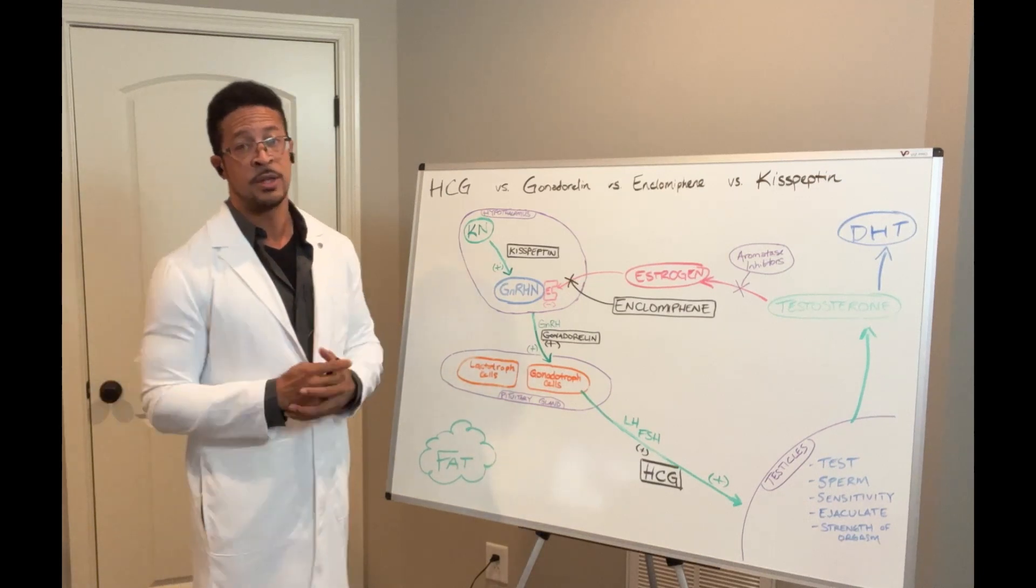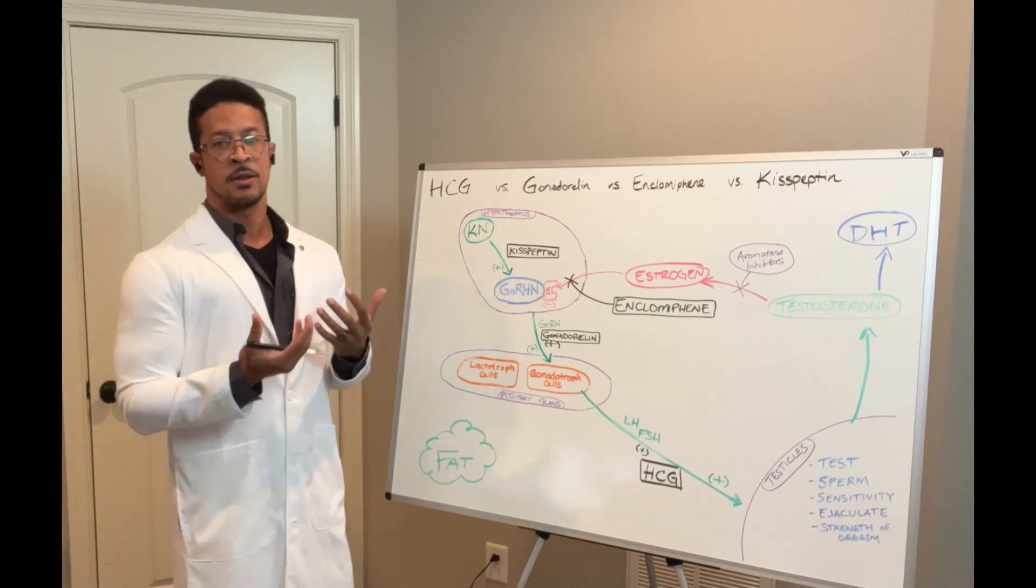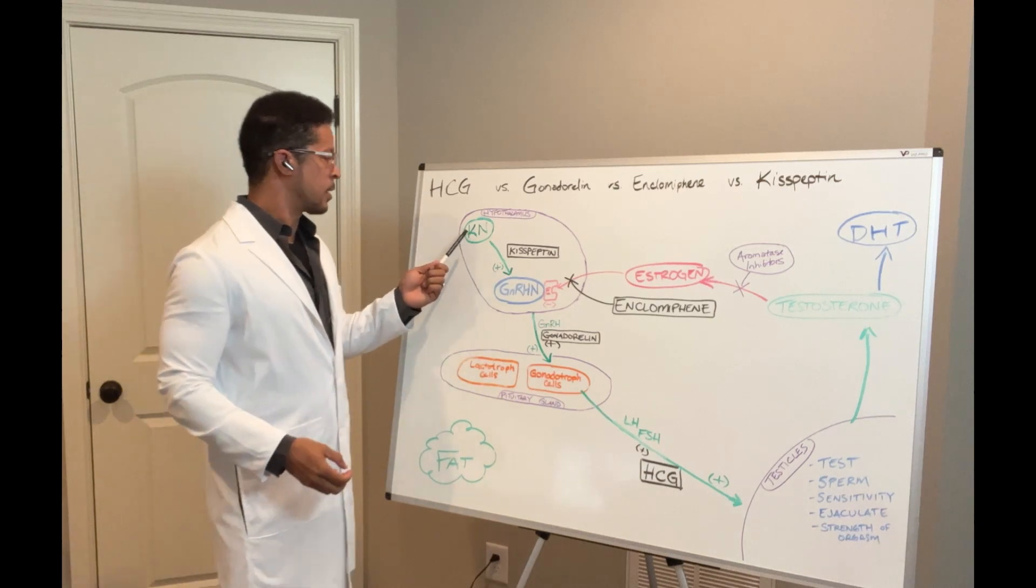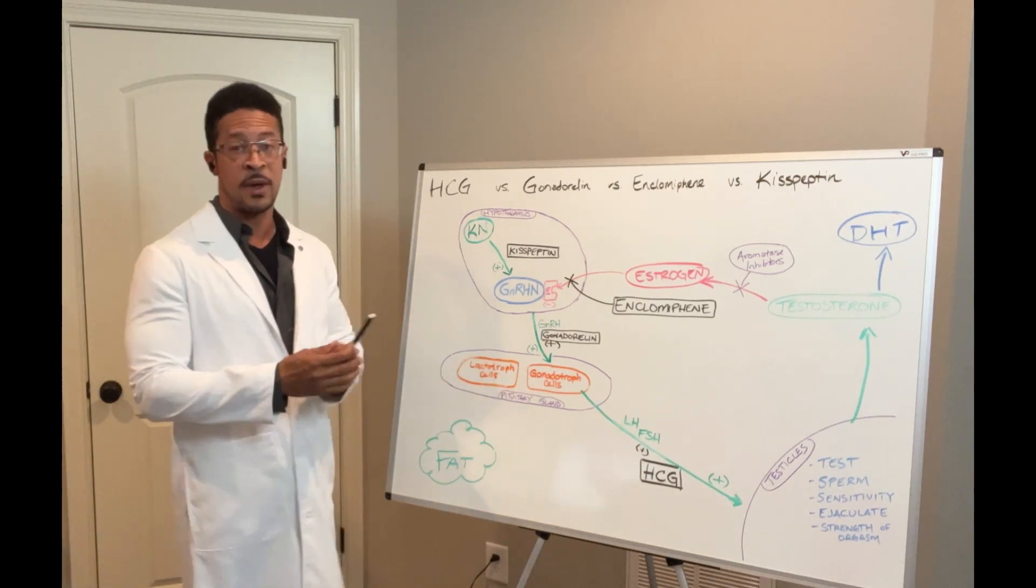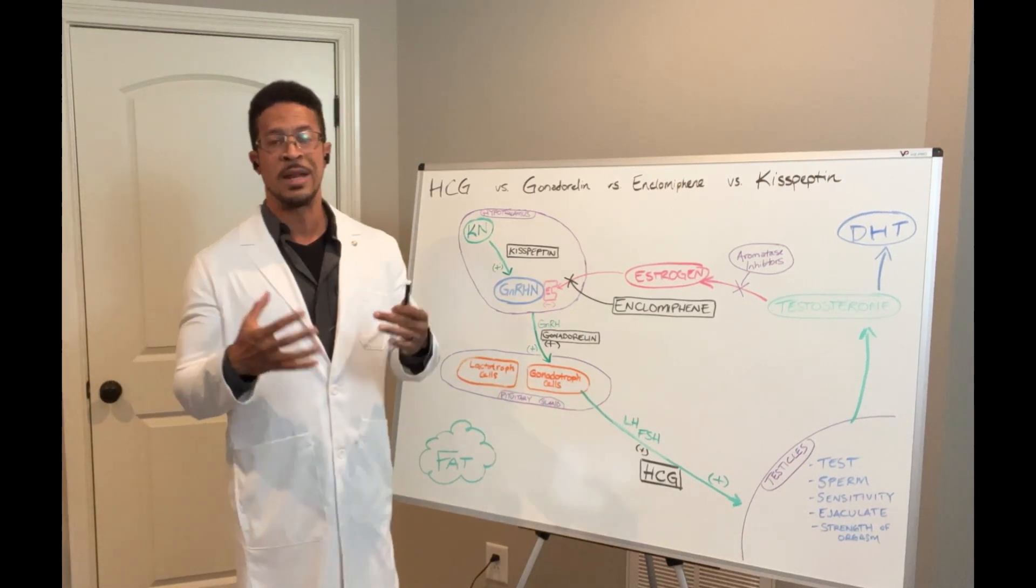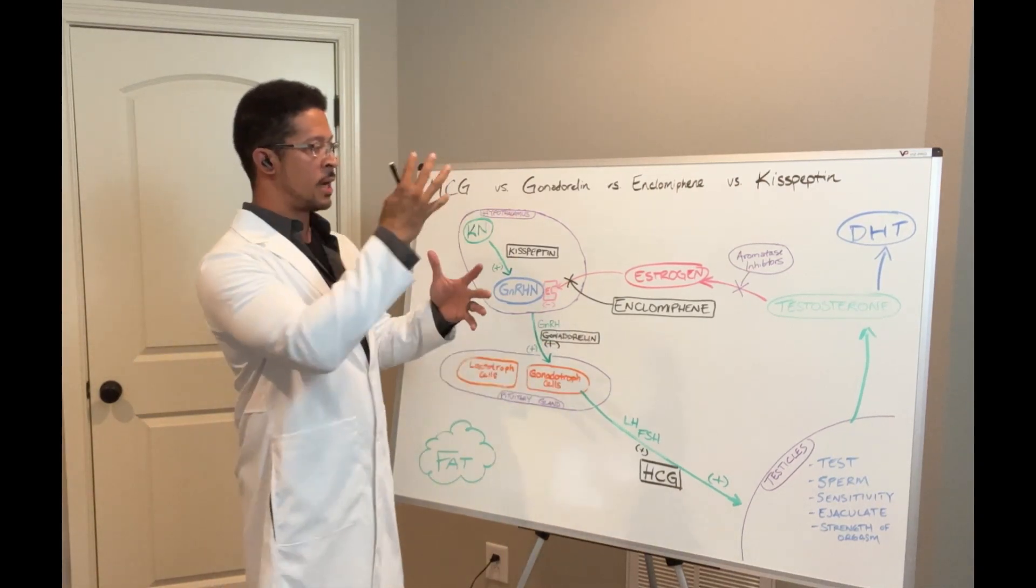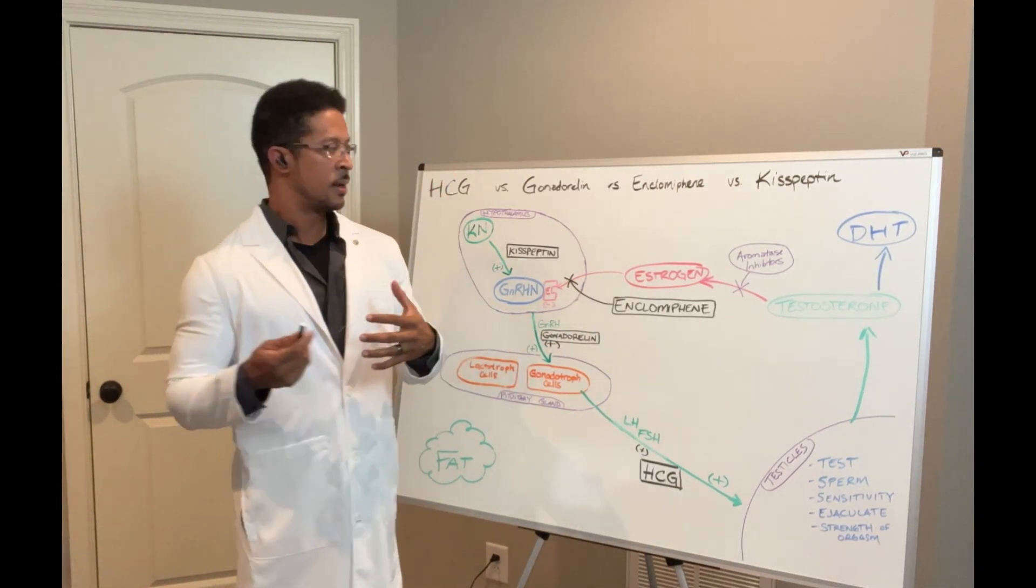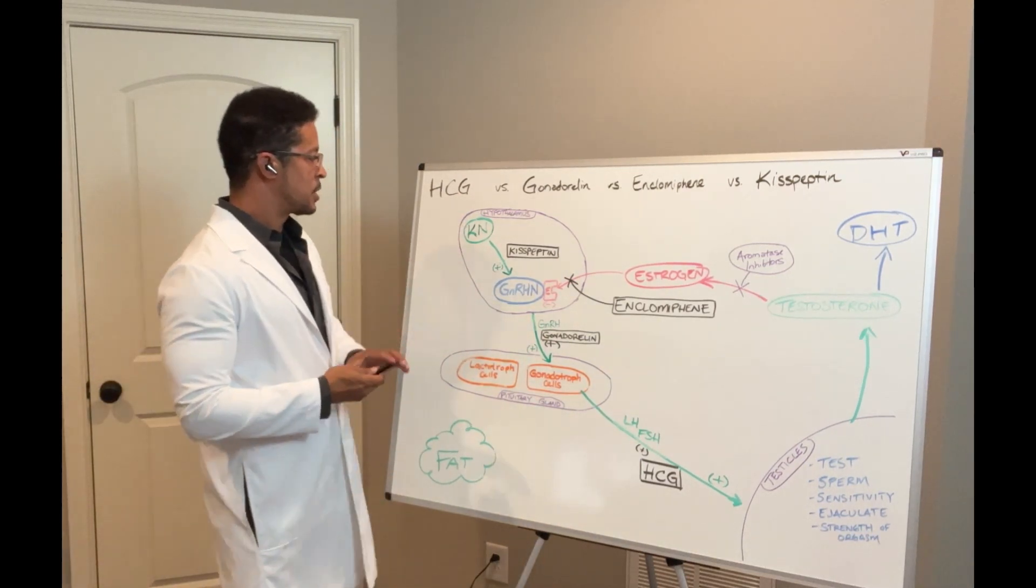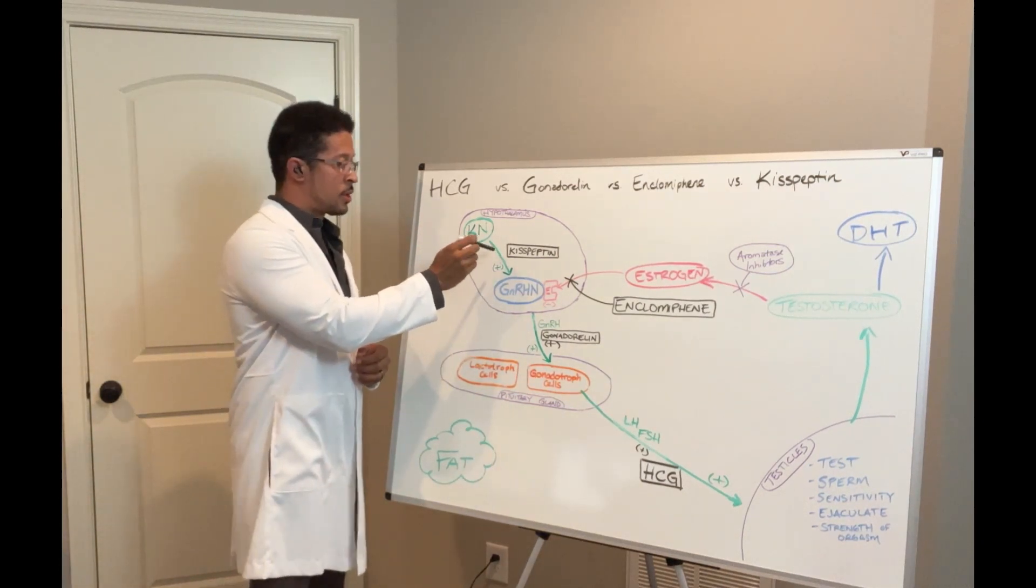So depending on which one is having the issue, one medication might work better than another. But let's jump into it. Where does it all start? It all starts right here, KN, the kisspeptin neuron. This is up in the hypothalamus, deep inside the center of your brain. At the kisspeptin neuron, that's what initiates the entire cascade.